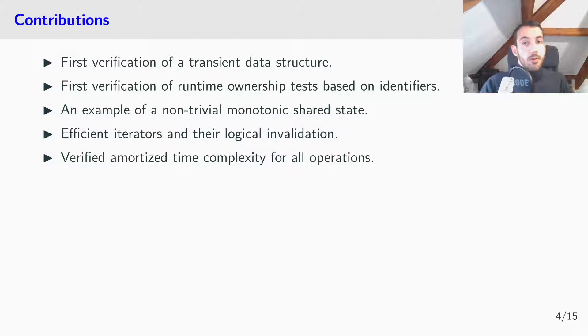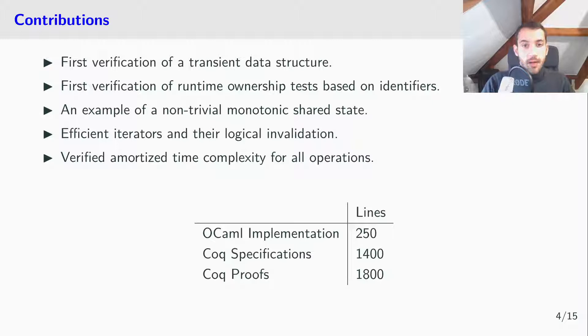In numbers, we have 250 lines of OCaml, which needed 1,400 lines of Coq specifications and 1,800 lines of Coq proof.